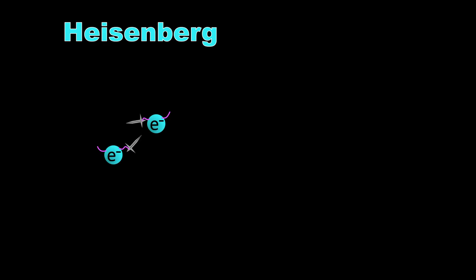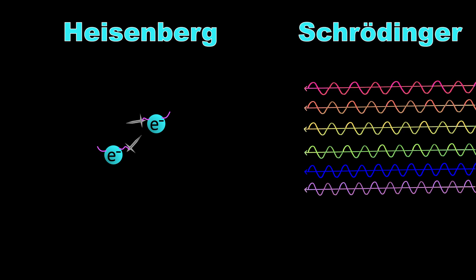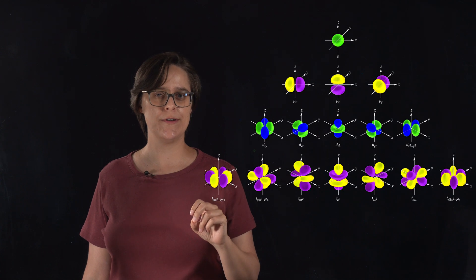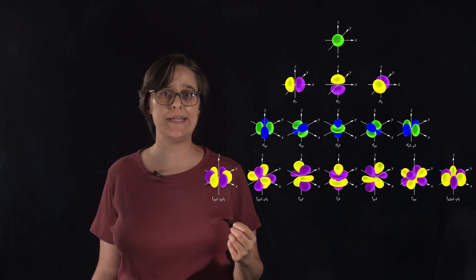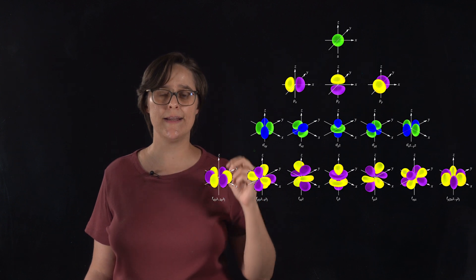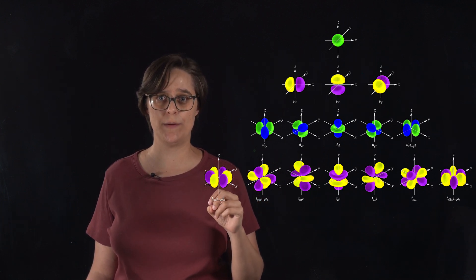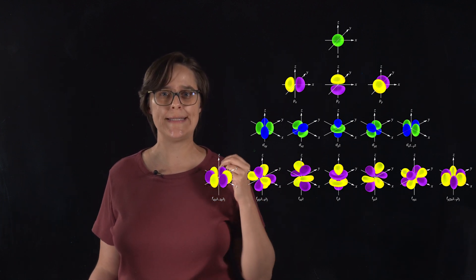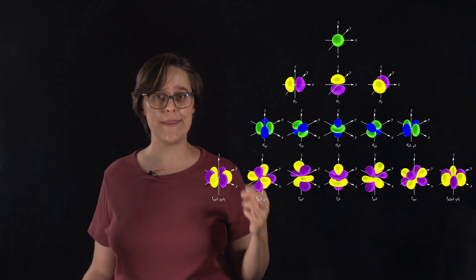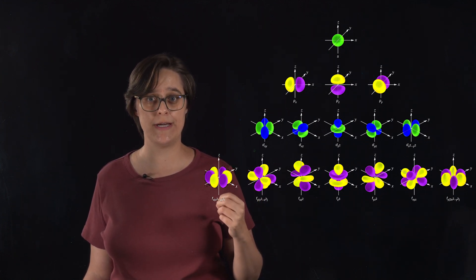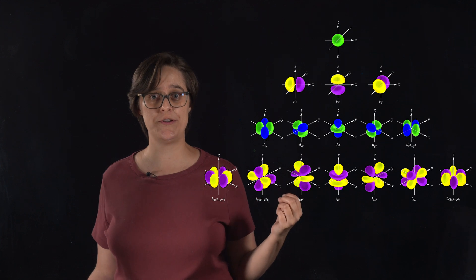So Heisenberg treated electrons in atoms as particles, and Schrödinger treated them as waves. But their results agree. That is wave-particle duality. Schrödinger's electron clouds are visualizations of the uncertainty in an electron's position in an atom. We don't know exactly where they are, but they like to spend a lot of their time in regions with these shapes.